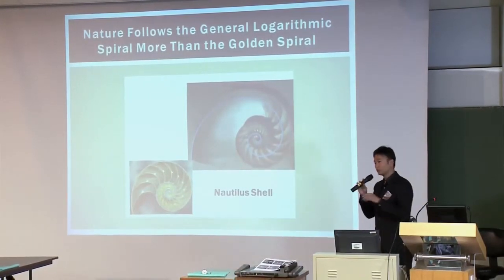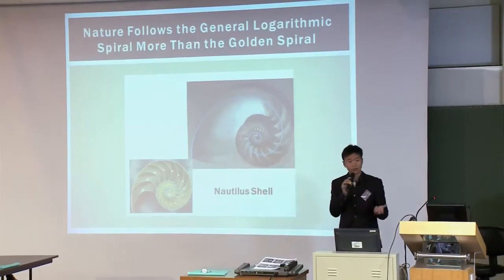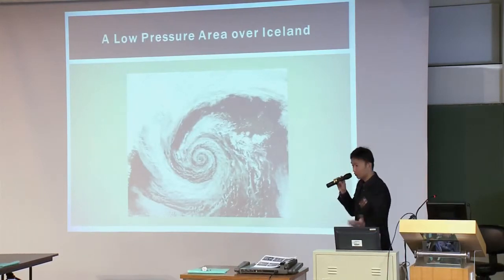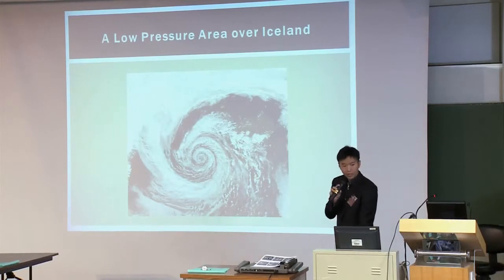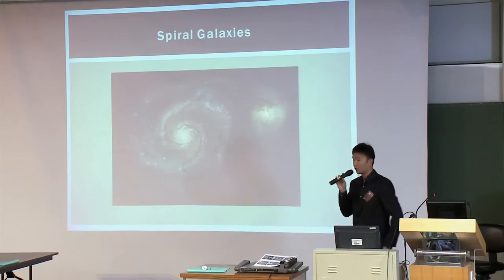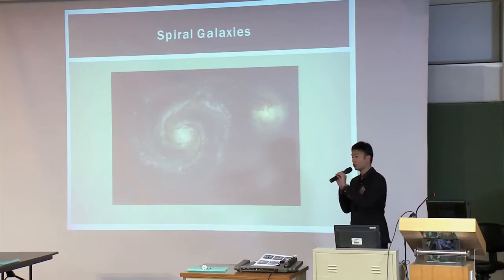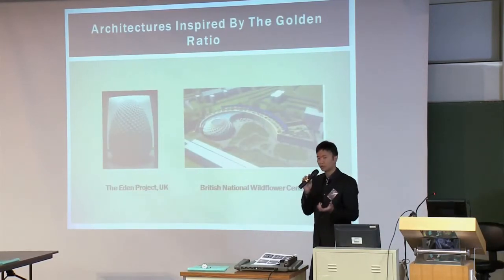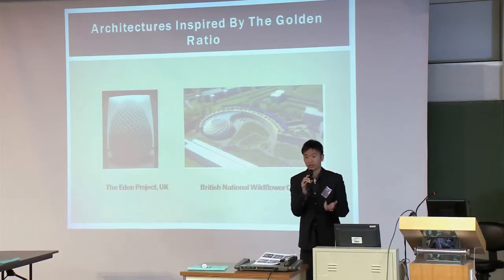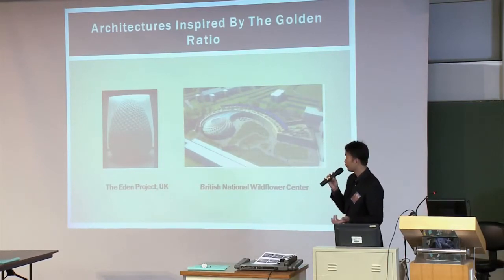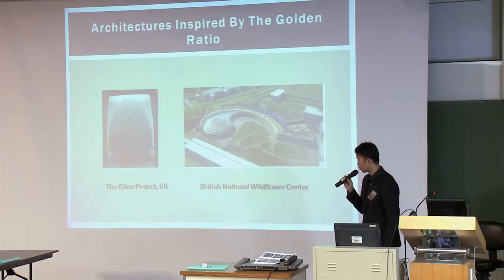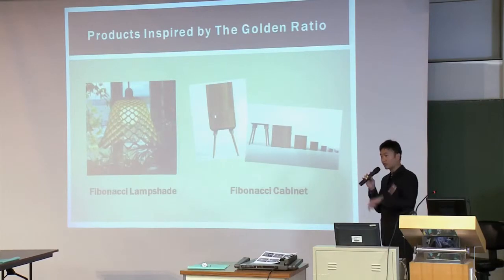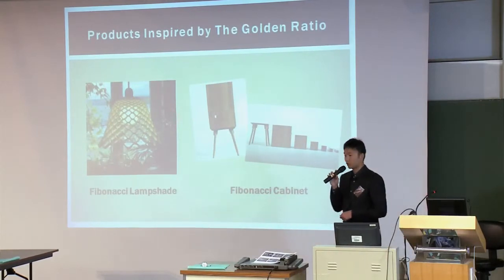In general, nature shows something more general — a logarithmic spiral. It's more general than the golden spiral. For example, from the ocean you can see the Nautilus shell; from the sky, a low-pressure area over Iceland or a hurricane. Not only that, but even spiral galaxies — so not just from the ocean and the sky, but also from the universe, you will see this kind of spiral pattern. Because of all these interesting properties, people have been inspired by nature to build or imitate it. For example, in architecture — the Eden Project in the UK, the British National Wildlife Centre. People also use it for product design, such as Fibonacci-named shapes and even the Fibonacci cabinet.